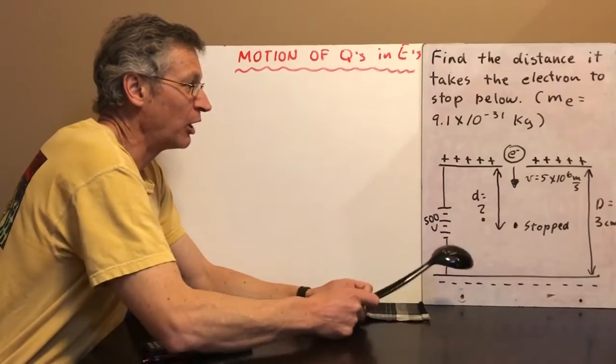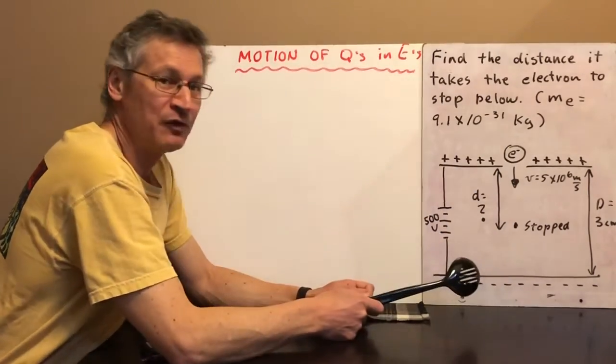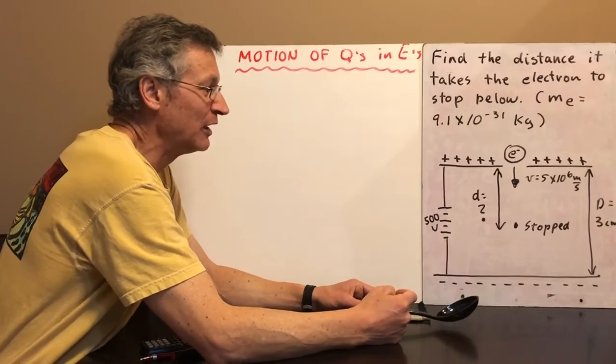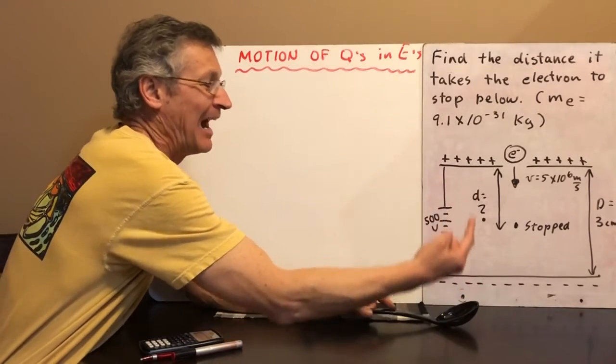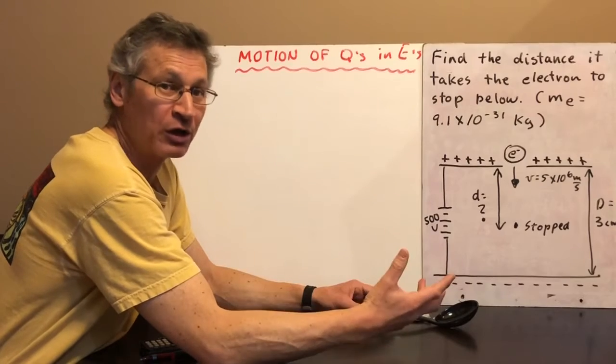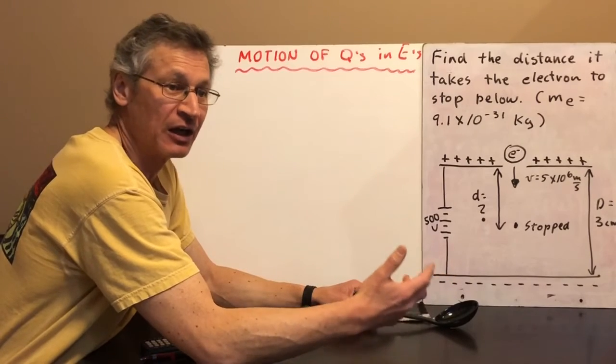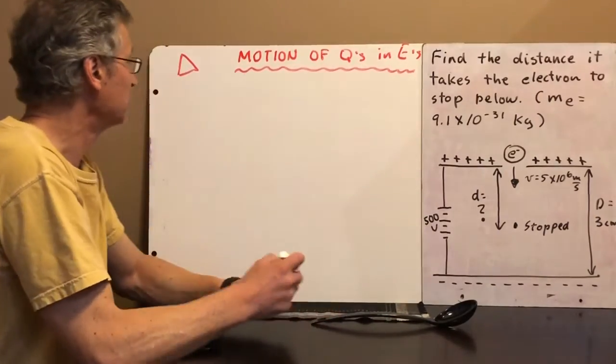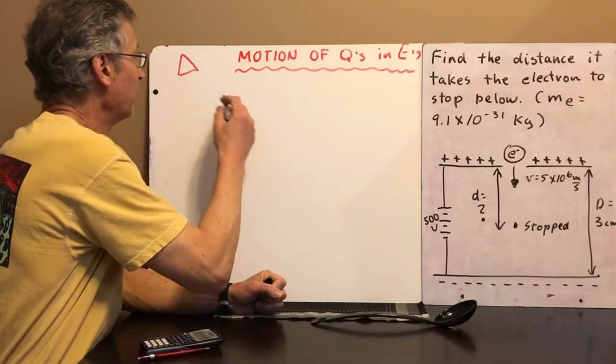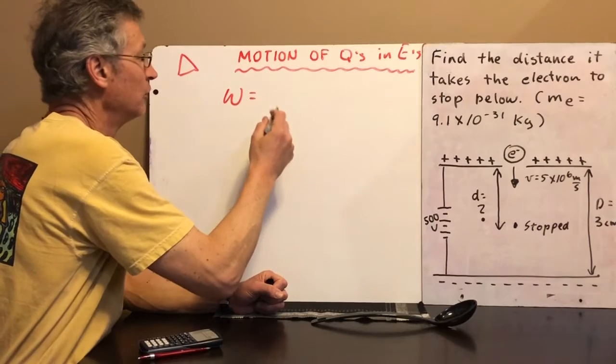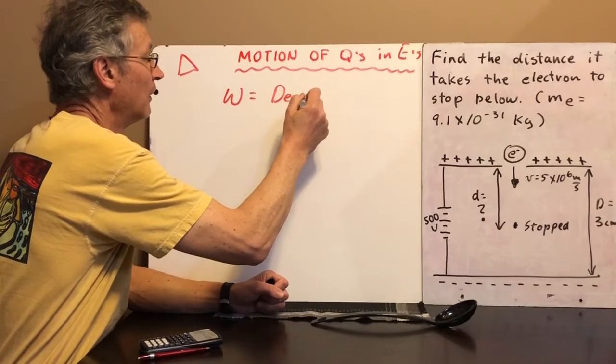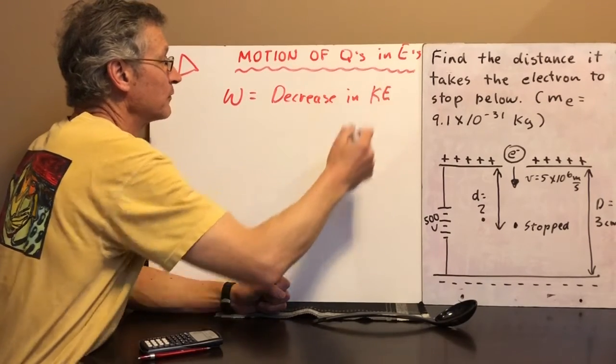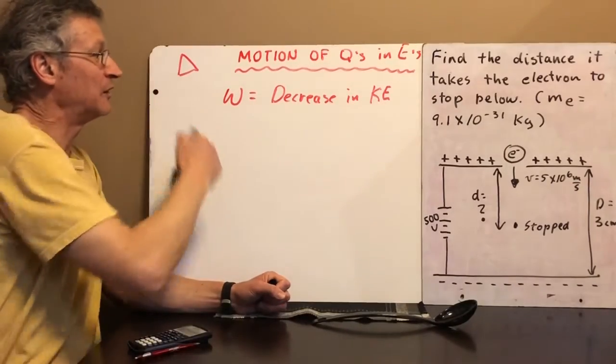Take a look here, as the electron slows down, remember the electric field, the negatives are pushing up on it, the positives are pulling up on it, the electric field is doing work on this electron as it slows down. So the work is going to be equal to the change in kinetic energy, no different from last unit. The work is going to be equal to the decrease in kinetic energy. I guess that's where the delta comes in.